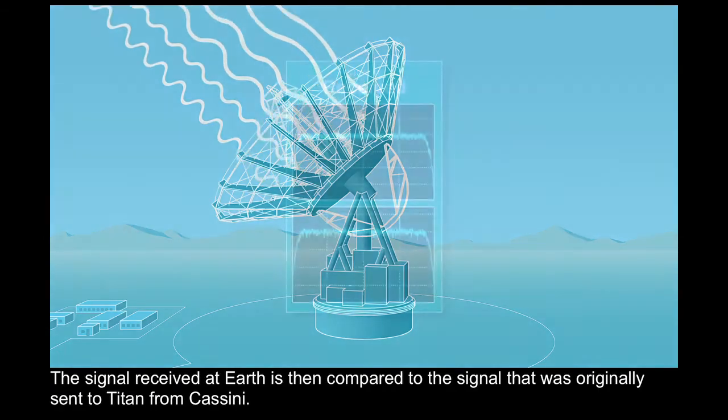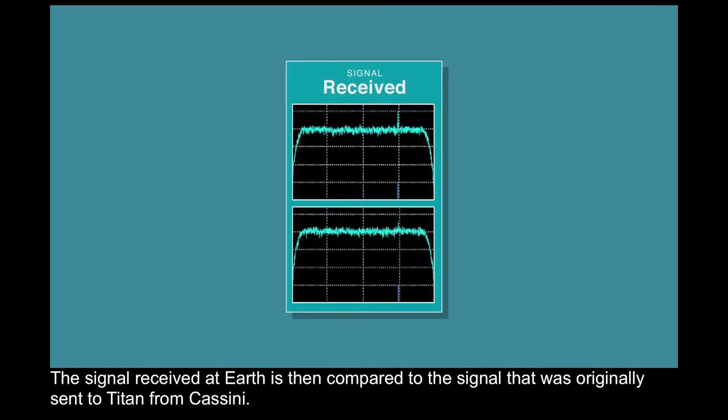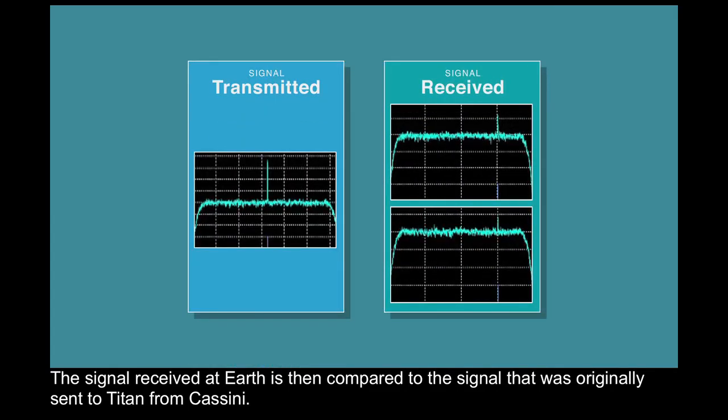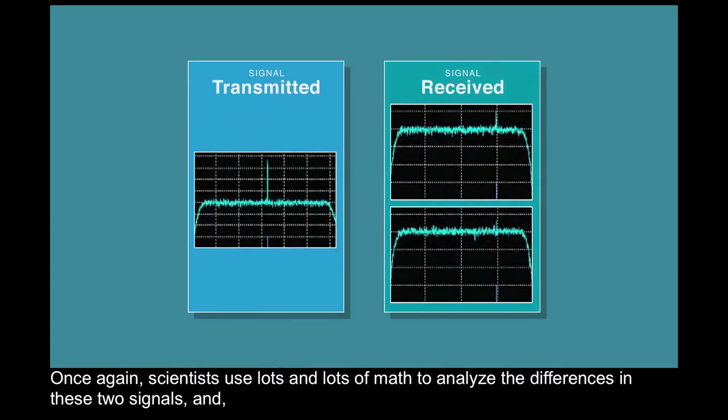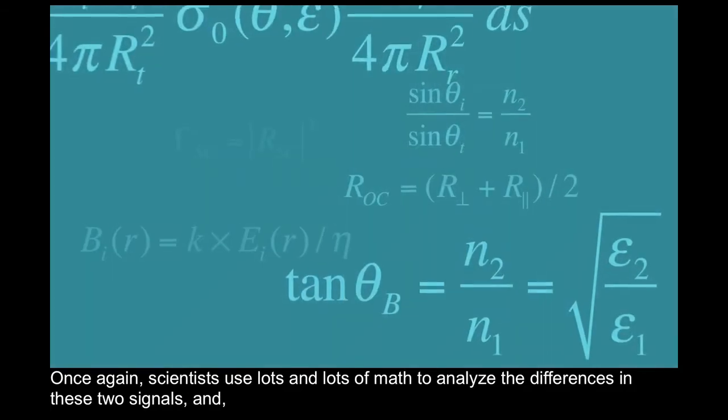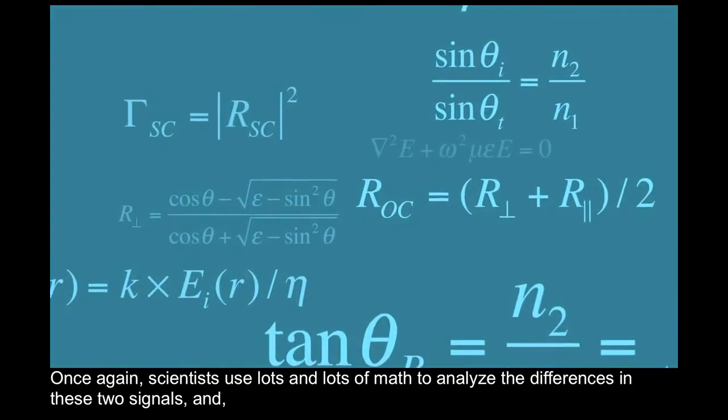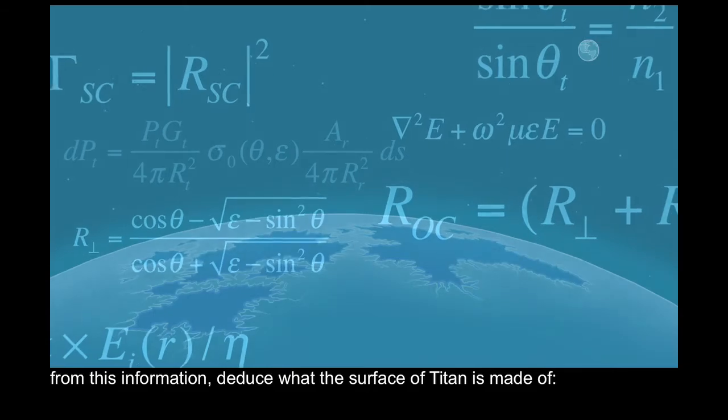The signal received at Earth is then compared to the signal that was originally sent to Titan from Cassini. Once again, scientists used lots and lots of math to analyze the differences in these two signals and, from this information,